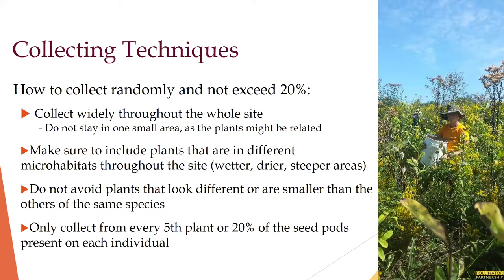There are different methods for how you can collect 20%. You can either collect all the mature seed from one out of every five plants you come across, or you can collect 20% of the mature seed on every plant you come in contact with. Technique will likely vary for the different species.